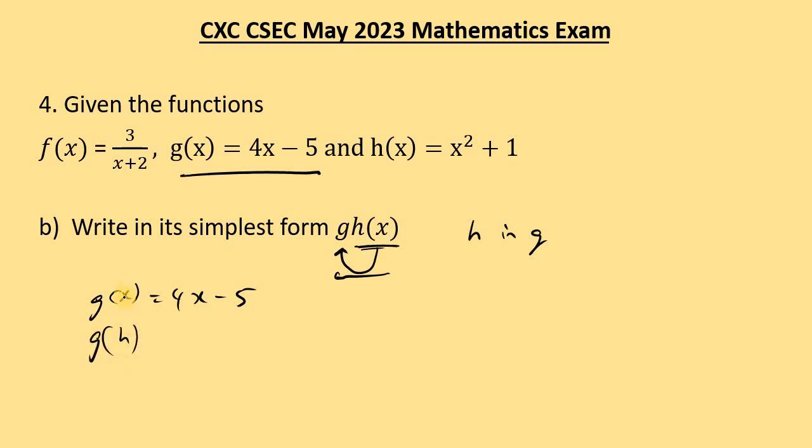We're going to put h in g. This is g. And let's put h in it. h goes in where the input variable is. So we're going to put 4 times, we're going to replace this x with the input. And the input is h. But what is h really? h of x is x squared plus 1. So over here is the expression we're going to put. x squared plus 1 minus 5. Remember, this is actually h. h is equal to x squared plus 1. Simplifying, we just multiply using distributive law. And that will give us 4x squared plus 4.